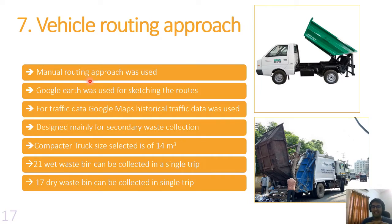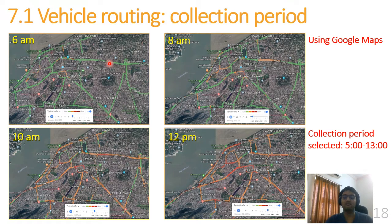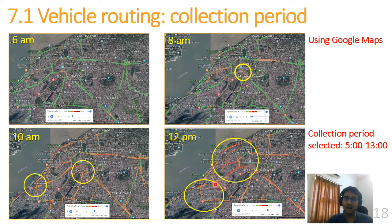Next, we sketched the collection routes. For vehicle routing, we used a manual vehicle routing approach with Google Earth and Google Maps. The first step in routing was to select the collection time window. In the morning, roads are essentially empty — as confirmed by Google Maps historical traffic data, where green lines indicate very low traffic. In the afternoon, however, there are congested areas we want to avoid. So collection was planned in the early morning, providing a collection period from 5 AM to 1 PM.